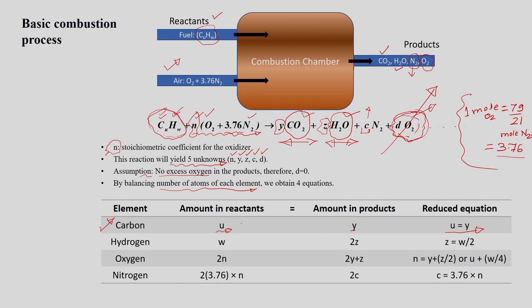Now balancing hydrogen: W amount of H is available in the reactor. When oxidized, it produces H2O, which has 2 hydrogens per molecule, giving 2Z total. Equating gives Z = W/2 — a straightforward balancing.